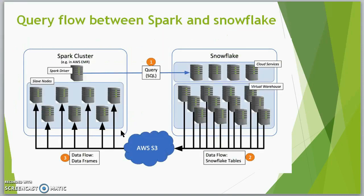The Spark driver sends the SQL query to Snowflake using the Snowflake JDBC connection. Snowflake uses a virtual host to process the query and copies the query result into AWS S3. Once the result is published to S3, the connector retrieves the data from S3 and populates it to the data frame. This is how Spark and Snowflake communicate.